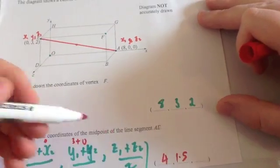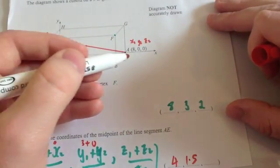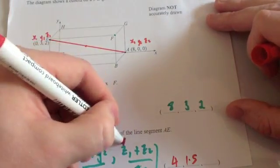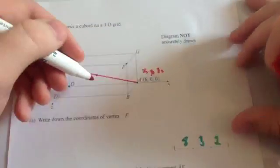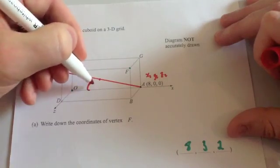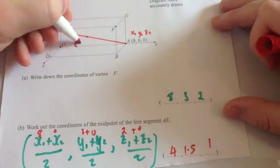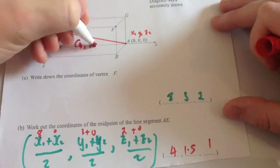And z1 plus z2, z1 is 2, z2 is 0, so 2 plus 0 is 2, and half it is 1. So the midpoint in this coordinate here would be 4, 1.5, 1.